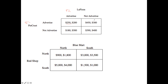Now let's look at what happens if LaPizza were to not advertise. Cover the left-hand side of the matrix and look at the payoffs with respect to PieCrust. In this case, PieCrust can either advertise and get a payoff of $450, or not advertise and get a payoff of $390. It makes sense for PieCrust to advertise because $450 is greater than $390.